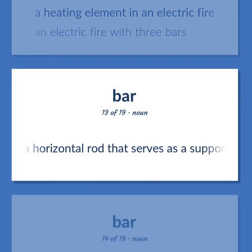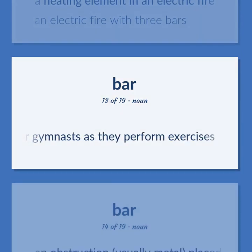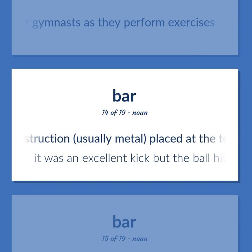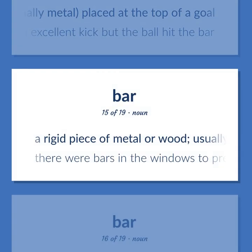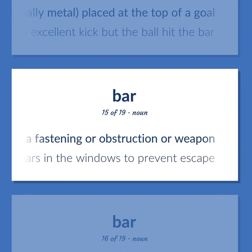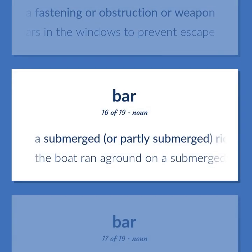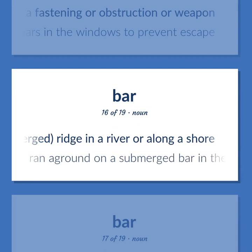A horizontal rod that serves as a support for gymnasts as they perform exercises. An obstruction, usually metal, placed at the top of a goal. It was an excellent kick but the ball hit the bar. A rigid piece of metal or wood, usually used as a fastening or obstruction or weapon. There were bars in the windows to prevent escape. A submerged, or partly submerged, ridge in a river or along a shore. The boat ran aground on a submerged bar in the river.